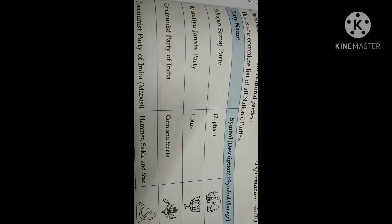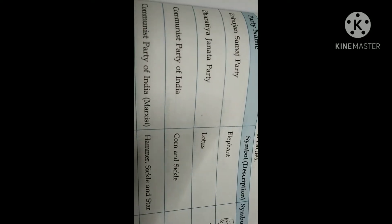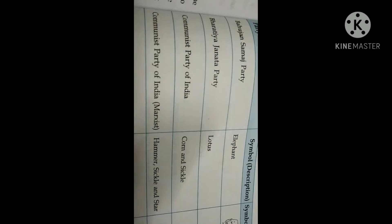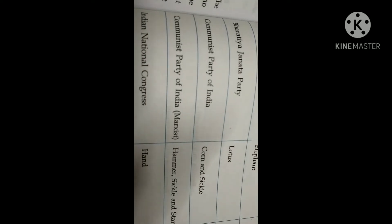The election commission gives some symbols to the candidates. For example, Bahujan Samaj Party — their symbol is the elephant. Bharatiya Janata Party — lotus. Communist Party of India — corn and sickle. Communist Party of India (Marxist) — hammer, sickle, and star. Indian National Congress — hand. These are the symbols given to the national parties by the Election Commission of India.